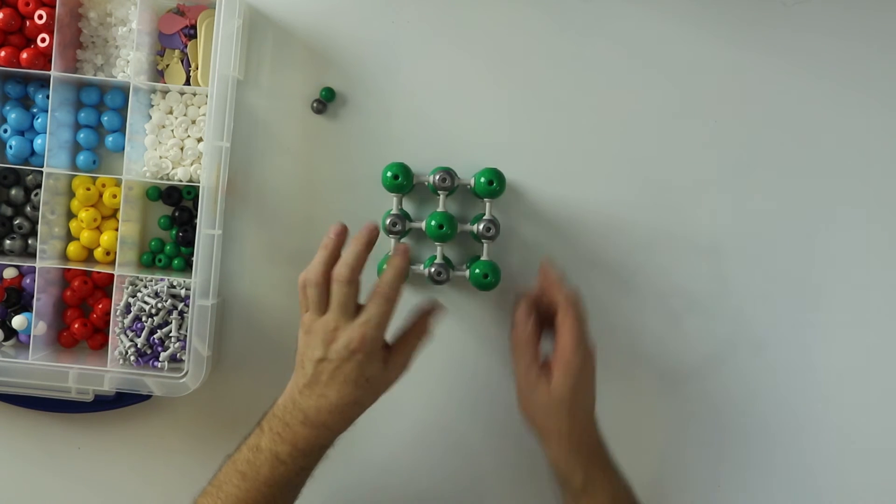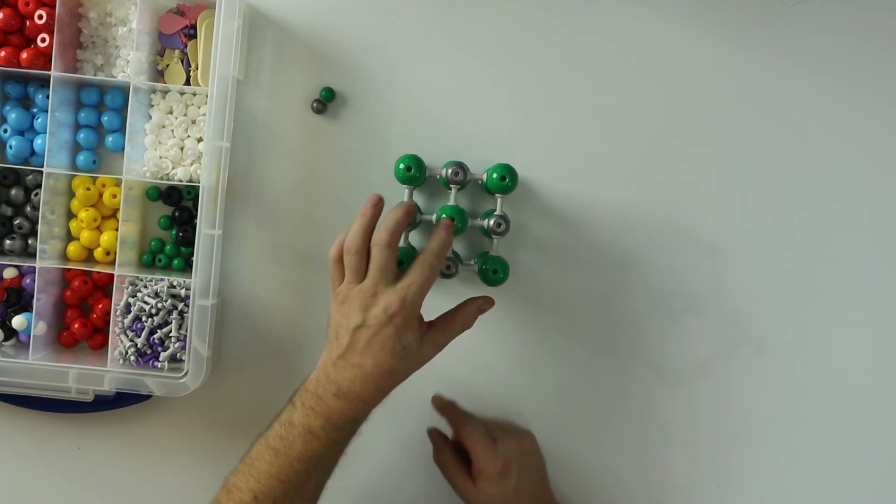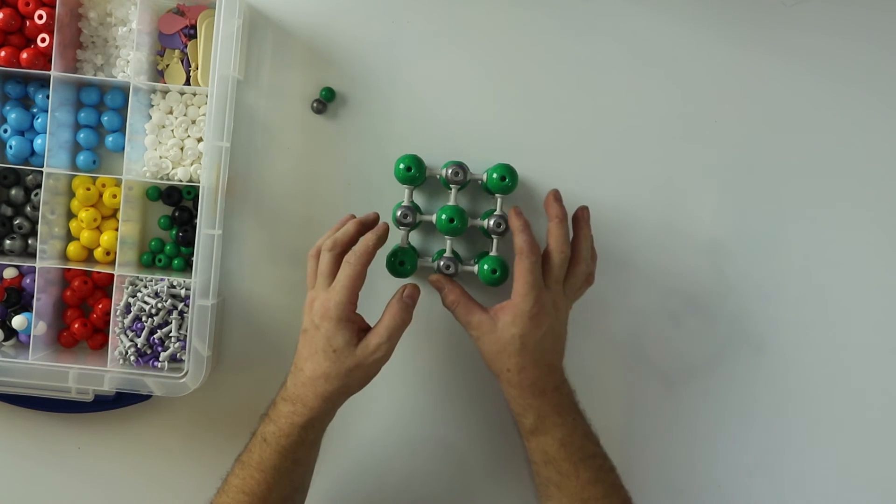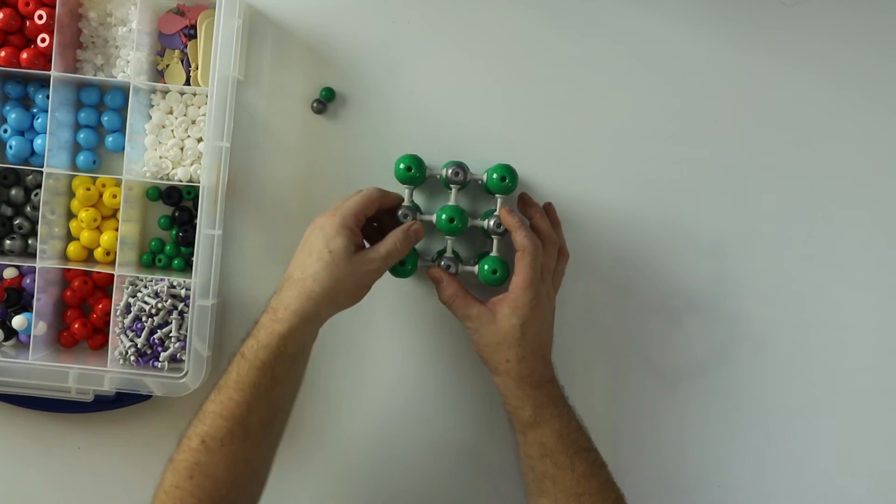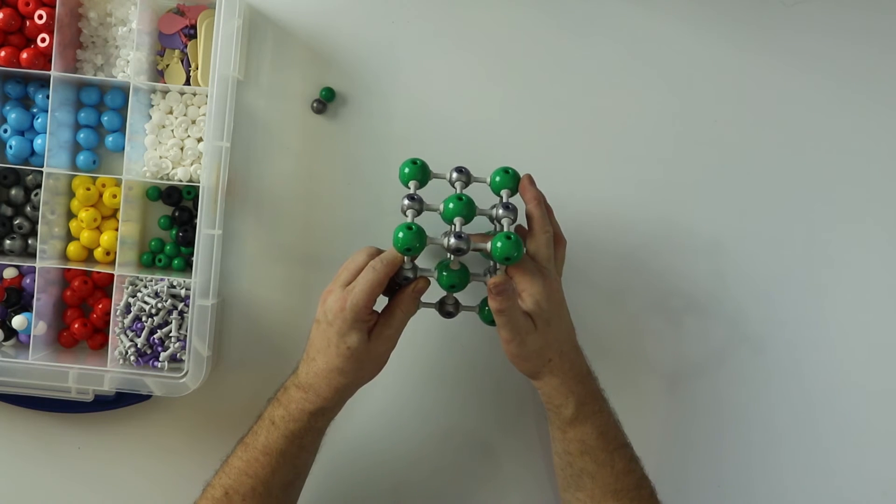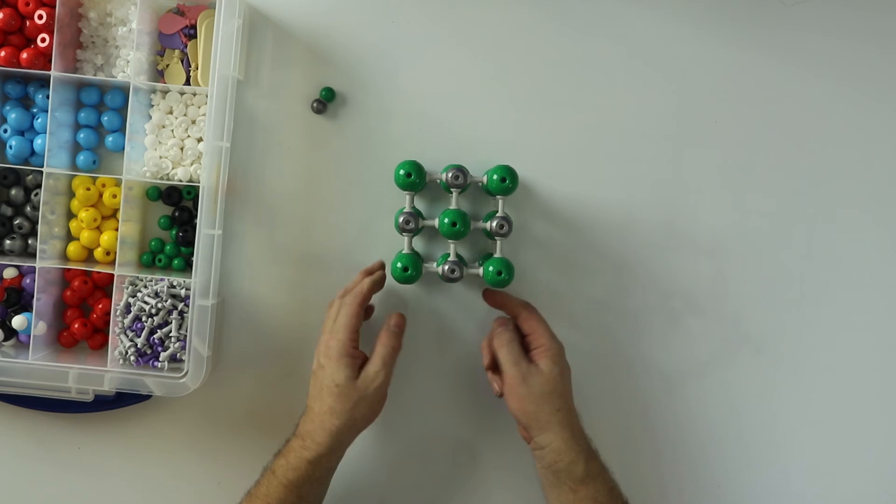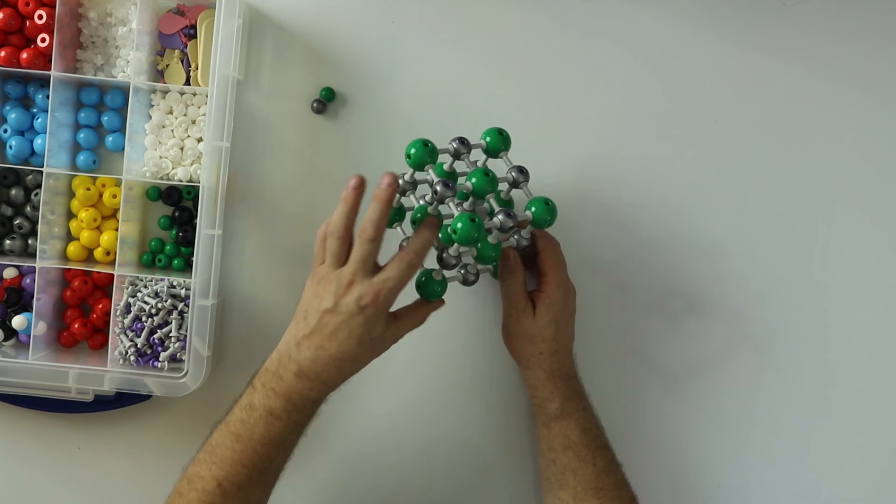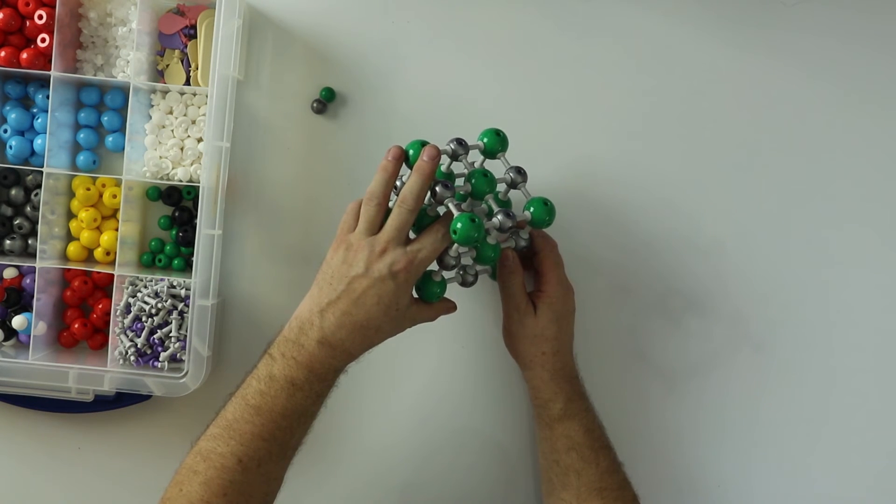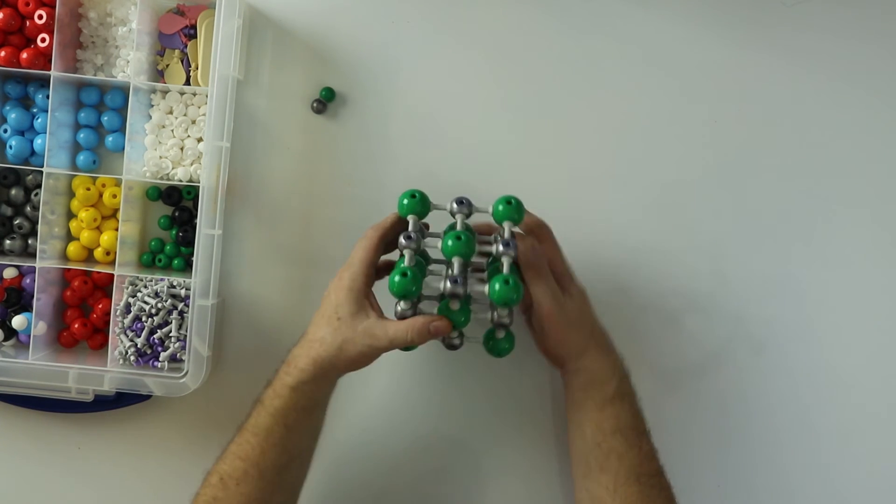Let's look at the chlorine. This chlorine atom, when it becomes an ion, negatively charged, attracts four sodium atoms this way, another one underneath, and another one on top. So we've got one chloride ion attracting six sodium ions, and one sodium ion attracting six chloride ions.